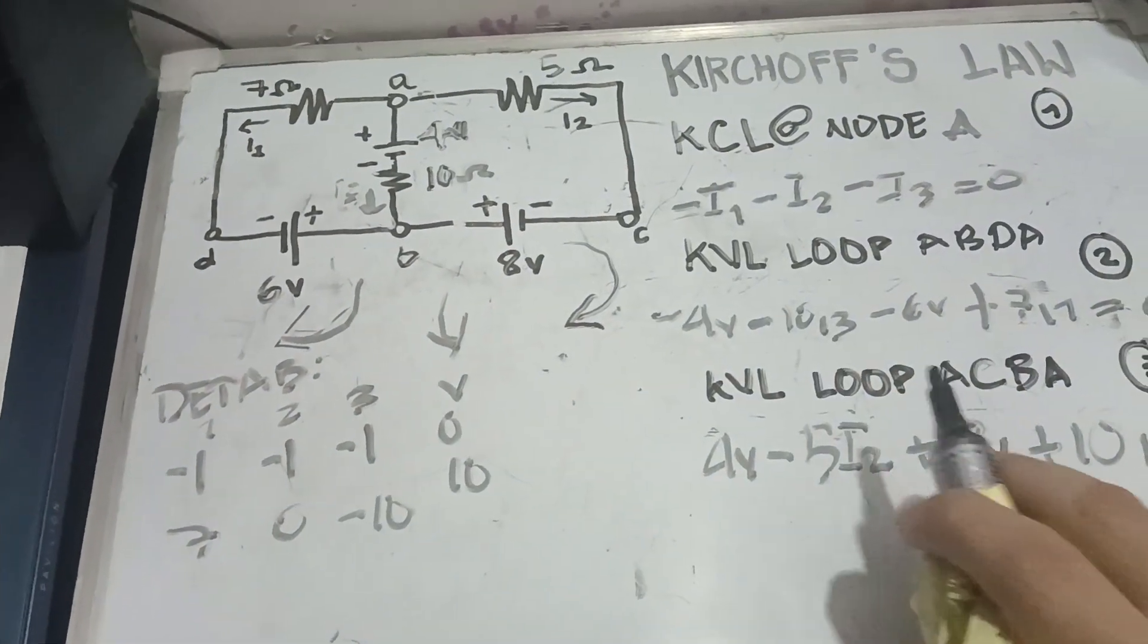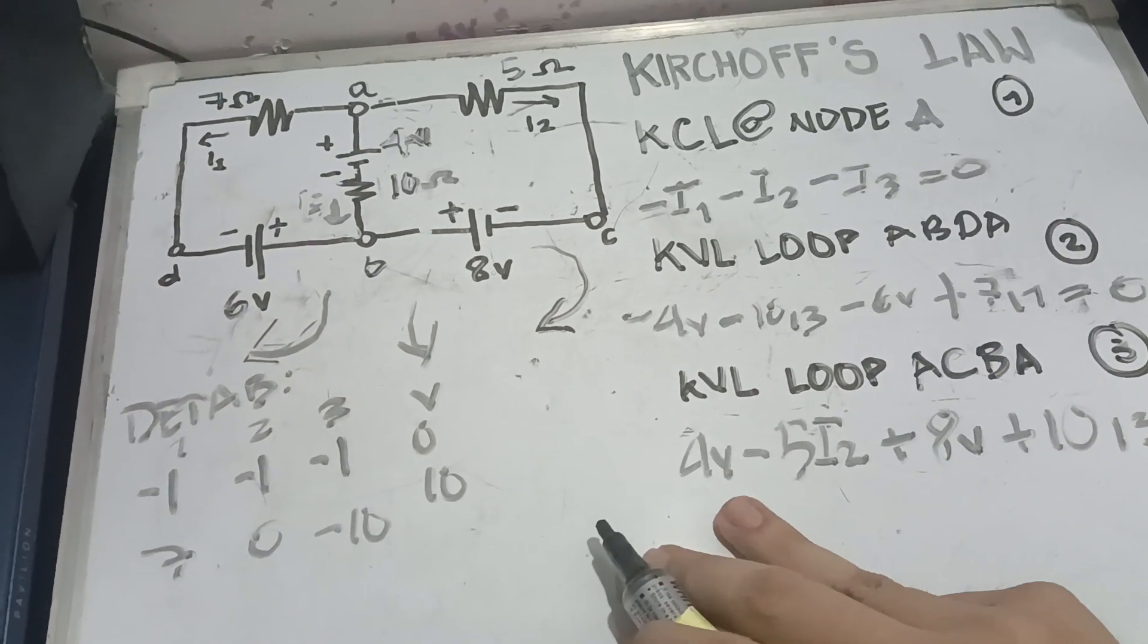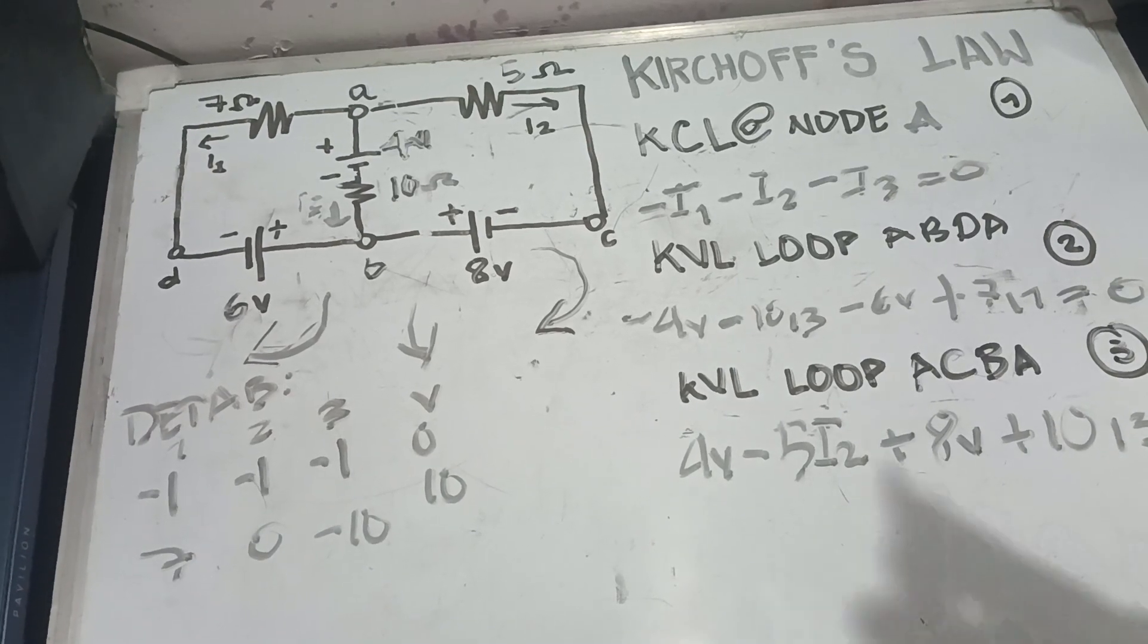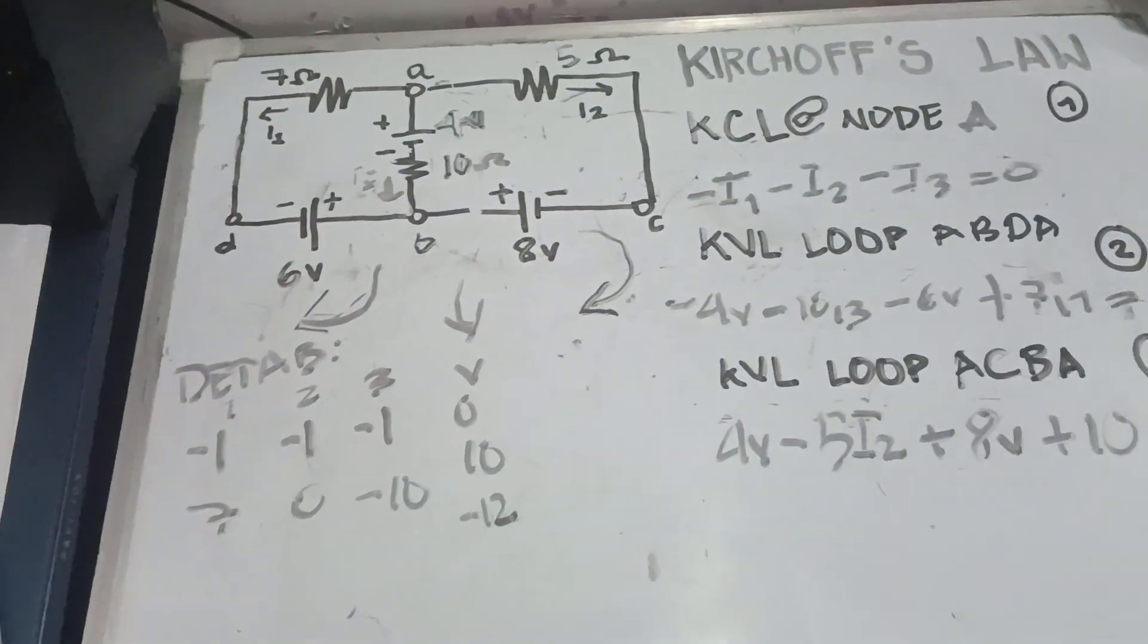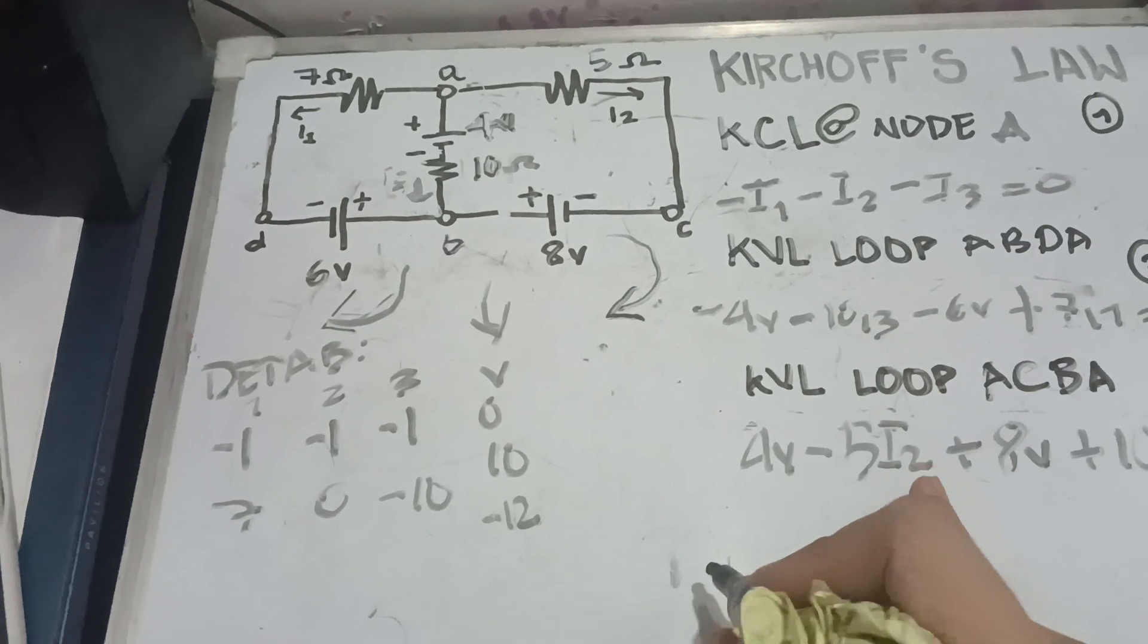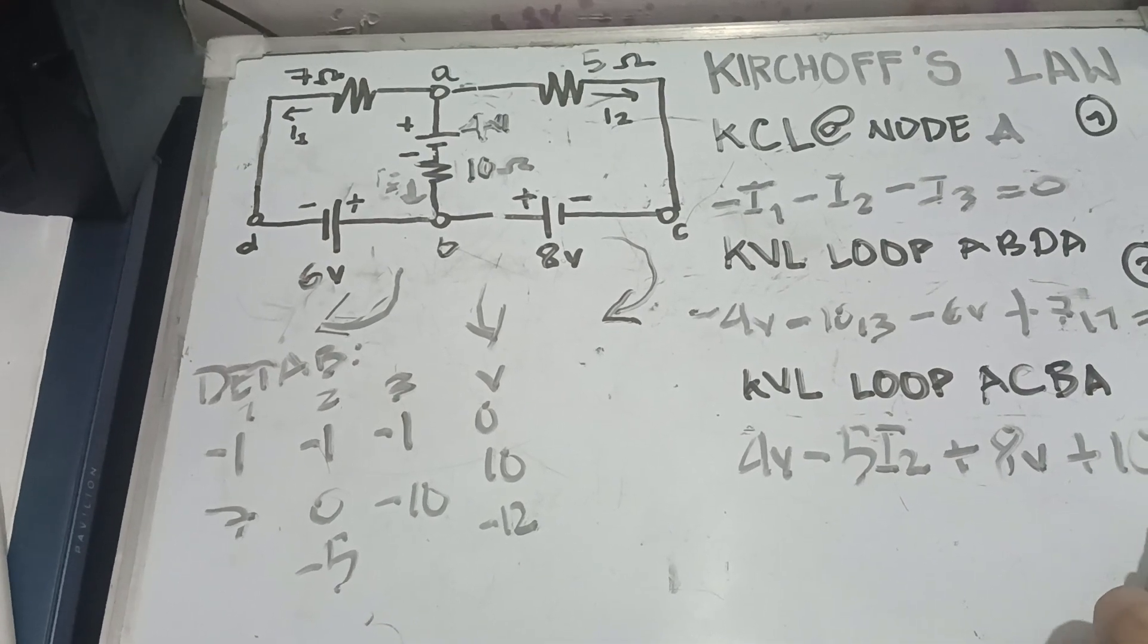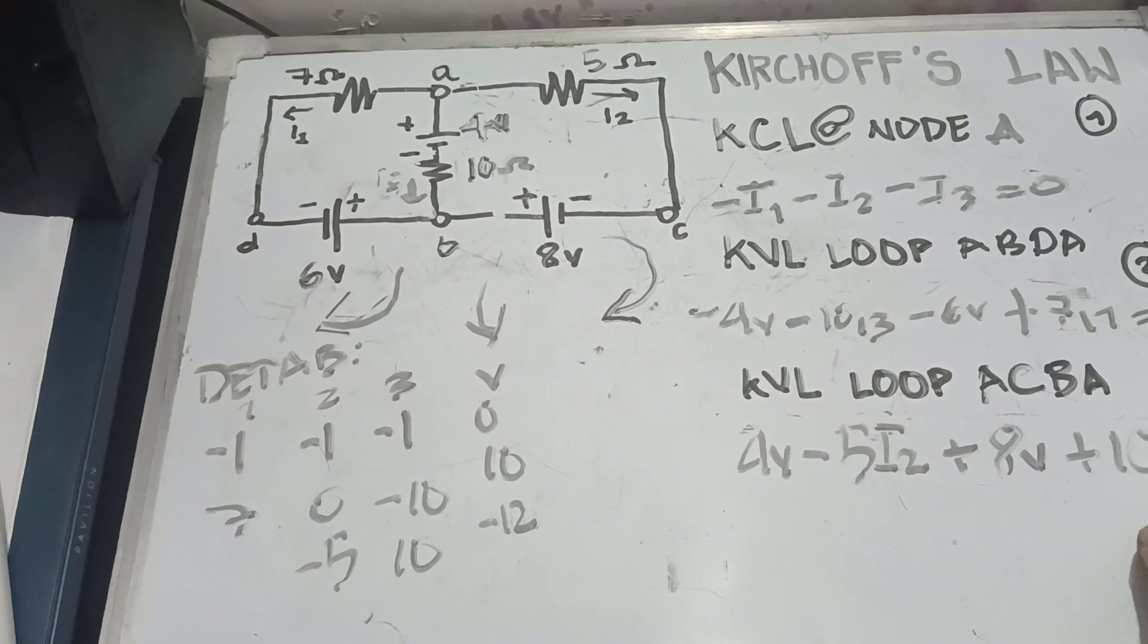Next. KVL loop ACBA. We're going to write our equation. Positive 4 plus positive 8 is going to be 12. But, we must transpose it to the right side. Meaning, positive 12 is going to be negative 12. Now, negative 5 I2. Just copy the signs or the values. Negative 5 I2 is going to be negative 5 in our table.